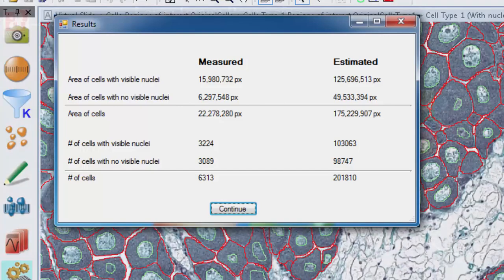The masks generated earlier of the full region of interest can be scaled and applied to the high-resolution images of the subregions. In this example, cells with nuclei and cells without nuclei are identified and measured using the high-resolution images.